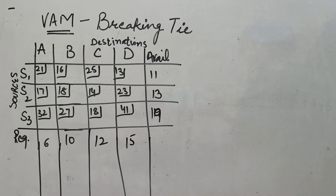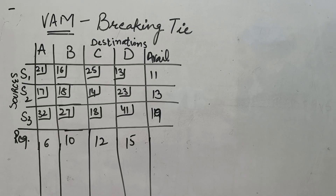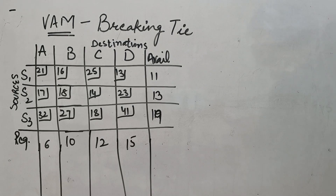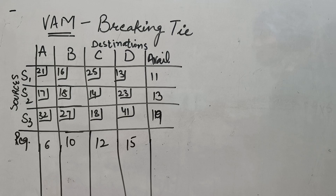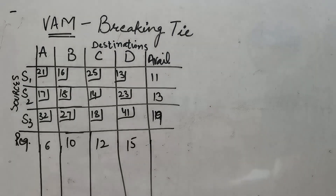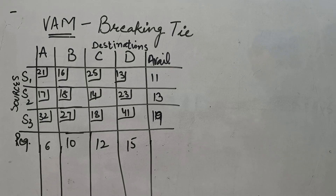Now let us see one video which will explain how the tie is broken if it comes in unit penalties or further in case of going inside the unit penalties. In this practical question, we will learn how to break the tie if it comes in case of unit penalties, or in case of going inside the cells. We will solve this question with the help of VAM.